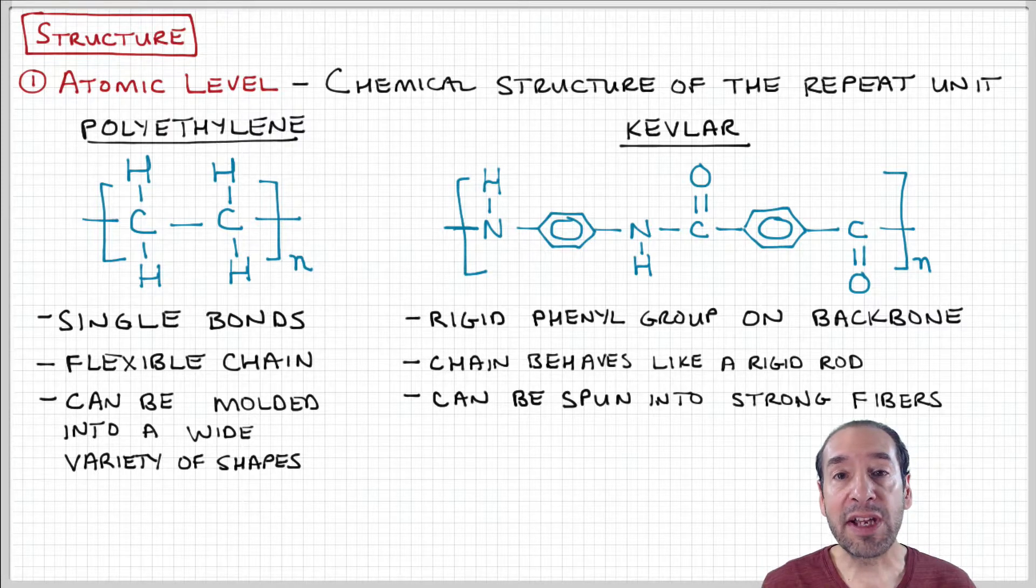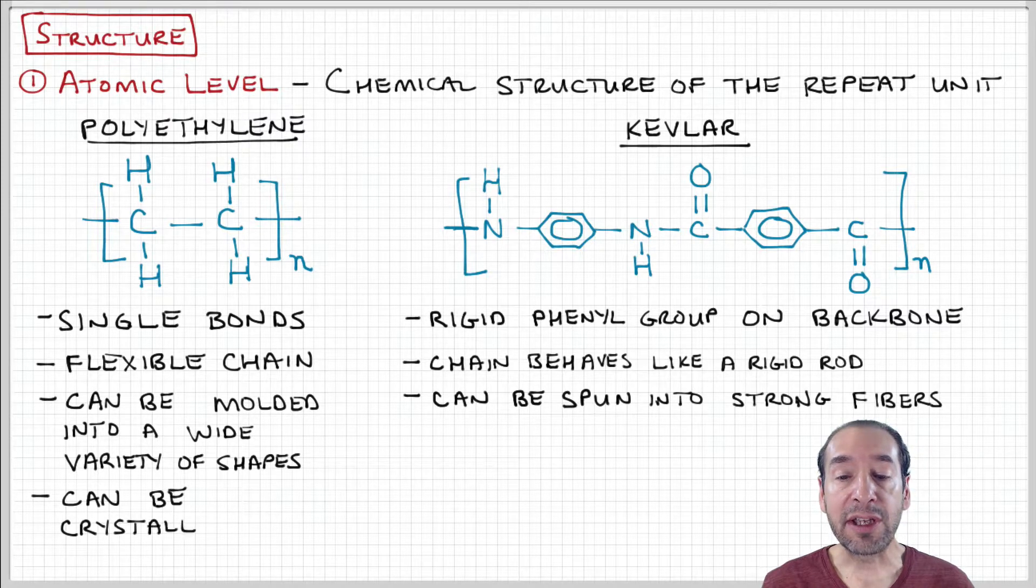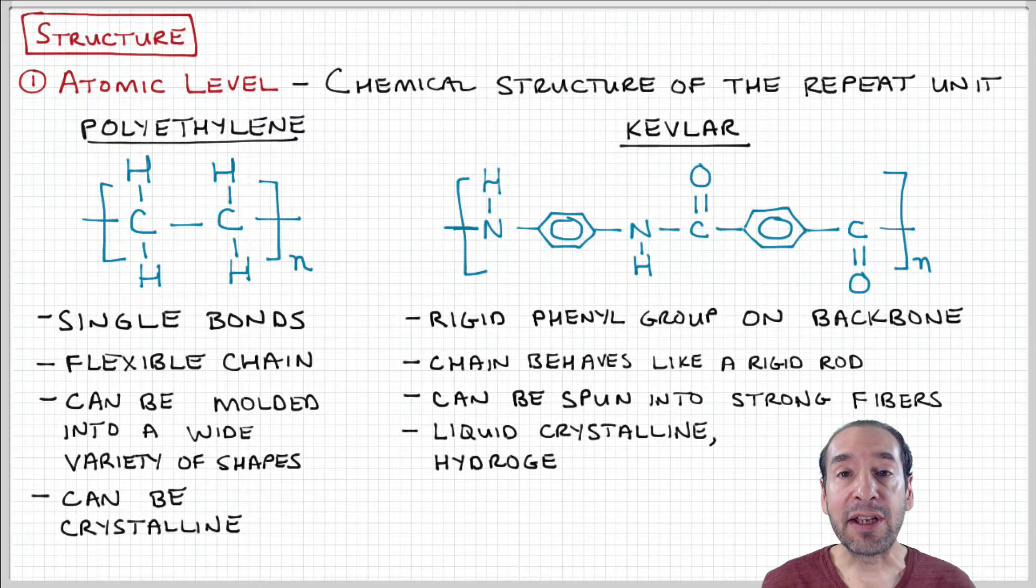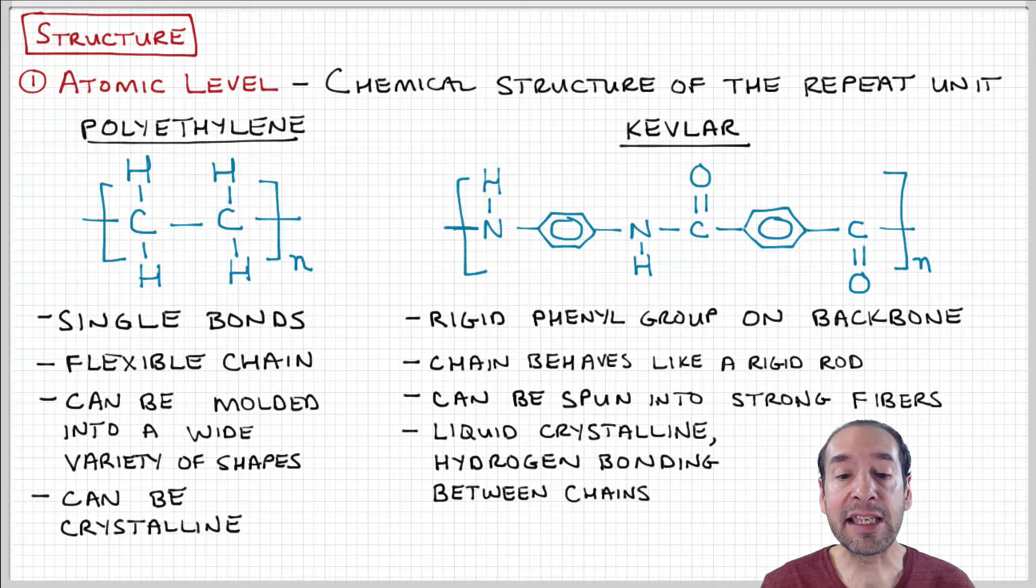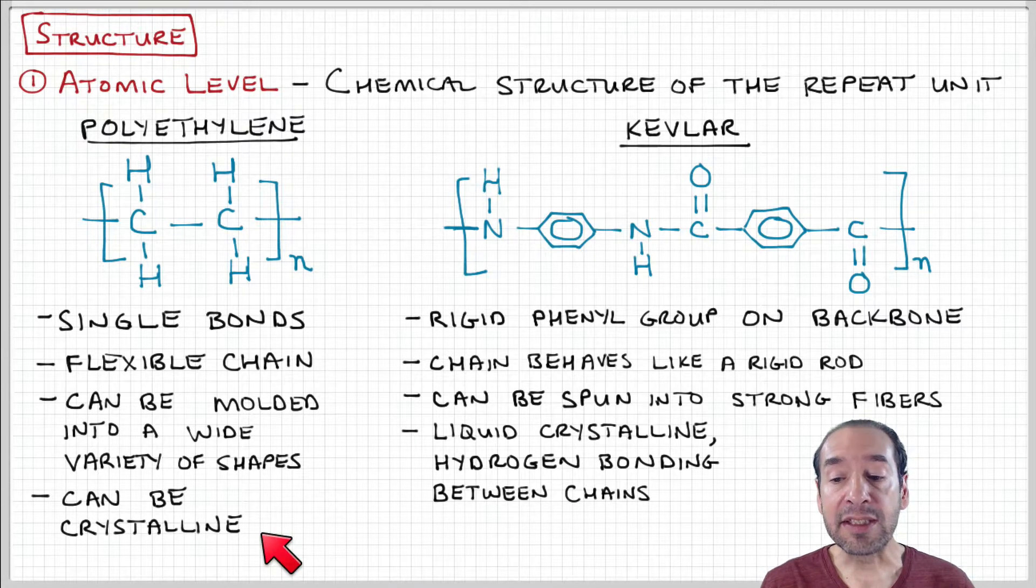The molecules are so rigid, but they can be spun into fibers with very high mechanical strength. As a result, Kevlar can be used for bulletproof vests and body armor, but not molded parts. The chain flexibility of polyethylene allows it to pack very densely and form a crystalline phase in some cases.